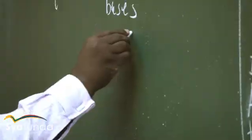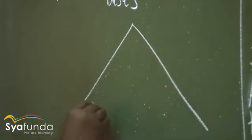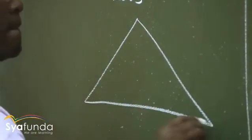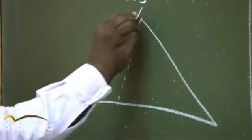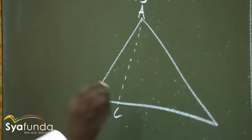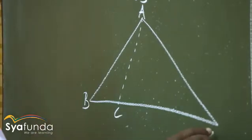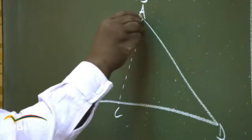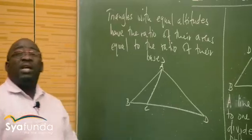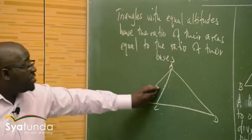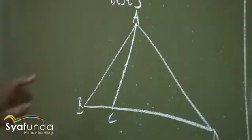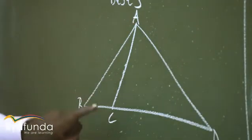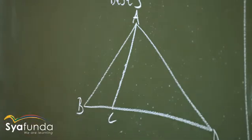If I have a triangle like this one — let's call this A, B, C, and D — I want us to look at these two triangles. In particular, triangle ABC as well as triangle ACD. Those are the two triangles that we're looking at. The theorem says triangles with equal altitudes have the ratio of their areas equal to the ratio of their bases.